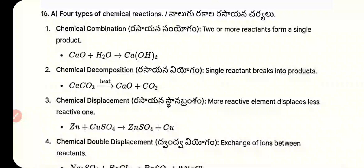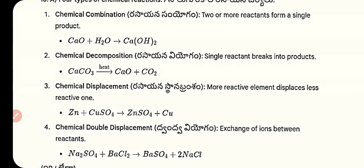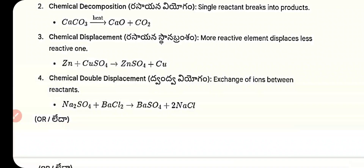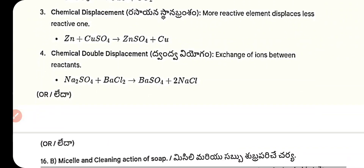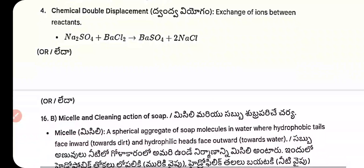Four types of chemical reactions: 1) Combination — two or more reactants form a single product: CaO + H₂O → Ca(OH)₂. 2) Decomposition — single reactant breaks into products: CaCO₃ → CaO + CO₂. 3) Displacement — more reactive element displaces less reactive: Zn + CuSO₄ → ZnSO₄ + Cu.